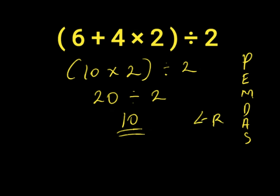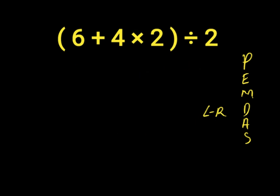Let's solve for the right answer. Inside our parentheses, we have both an addition and a multiplication. We got it wrong before because we solved addition first before multiplication, which is incorrect. We must solve multiplication first because it comes before addition according to the order of operations. 4 times 2 gives us 8.